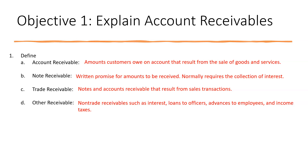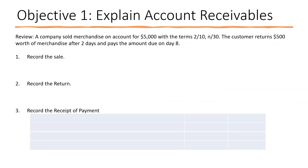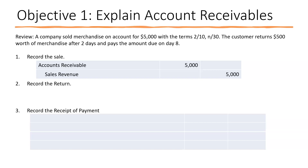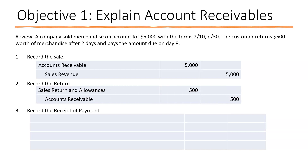We've seen a lot of this in previous chapters but we'll review it. A company sold merchandise on account for $5,000, terms 2/10 net 30. The customer returns $500 of merchandise after two days. To record the sale, we debit accounts receivable and credit sales revenue for $5,000. On the return, we debit the contra account sales returns and allowances and credit accounts receivable $500.